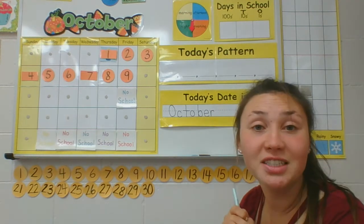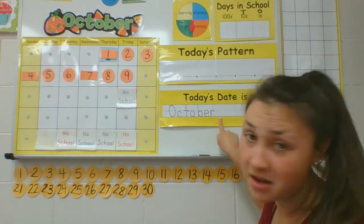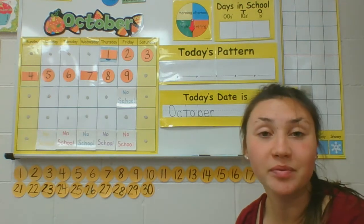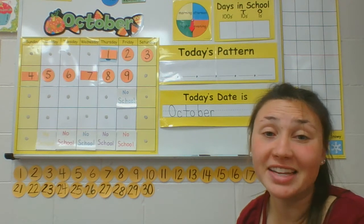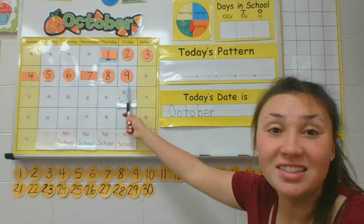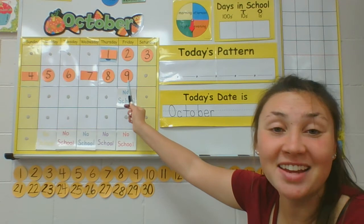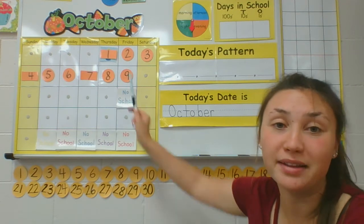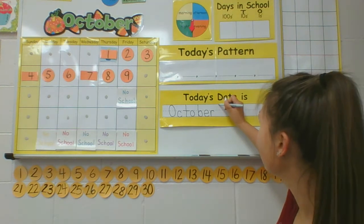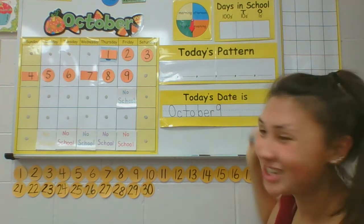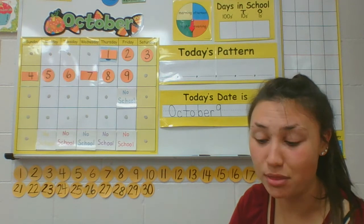Just like that. Now you can write your number of the day. What is the date we're in right now today? You can look at the calendar and see that today is the 9th. October 9th. So to make a 9, you do a circle and a line. Just like that. October 9th.